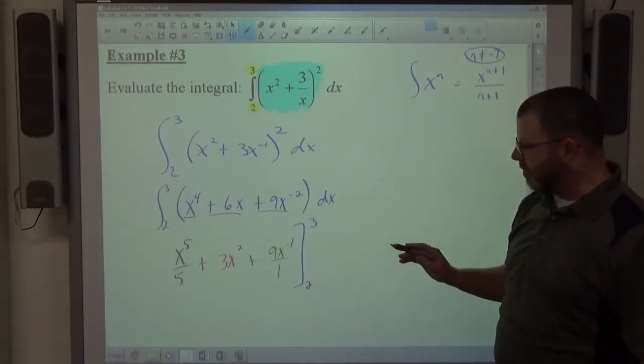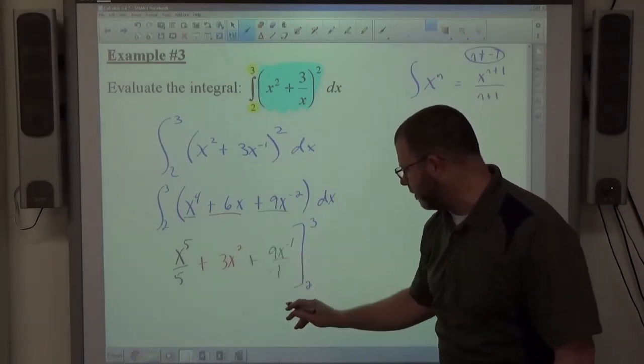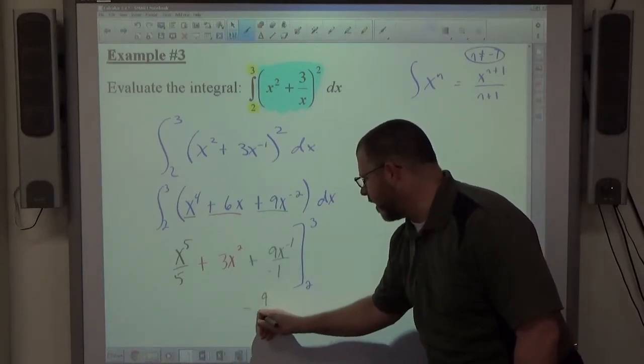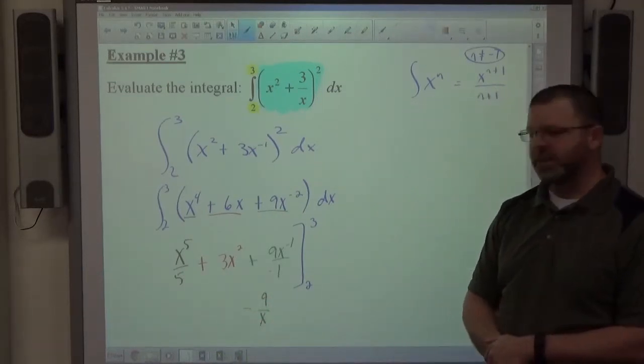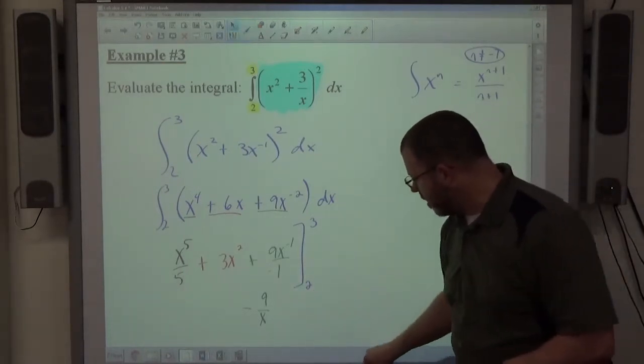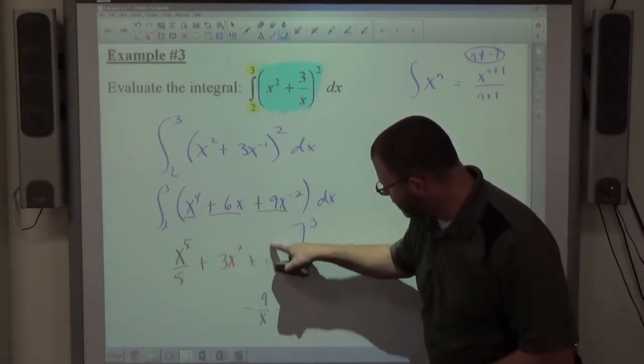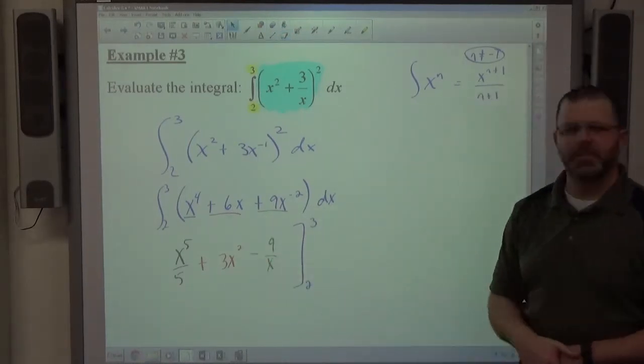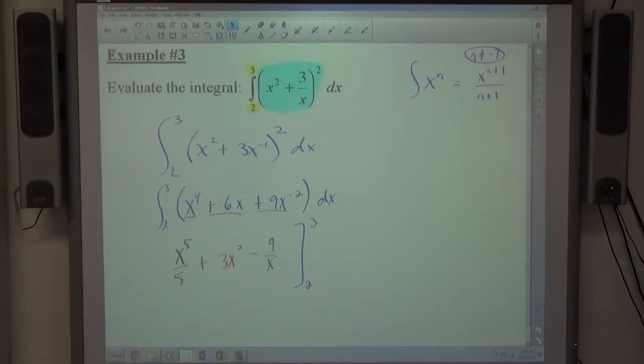So if I start evaluating this, first of all, is everybody okay with this green term? Let me just write it, minus 9 over x, the same as 9x to negative 1 over negative 1. That's a little prettier, right? So if I erase this and slide that right up there, it's a nicer structure to evaluate.